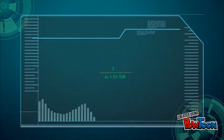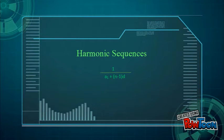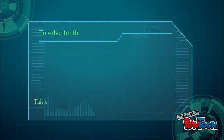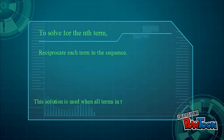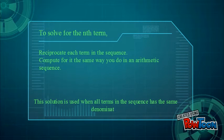Harmonic sequences: 1 over (a₁ + (n-1)d) is the reciprocal of each term from an arithmetic sequence. To solve for n, reciprocate each term in the sequence and compute the same way you do in an arithmetic sequence.